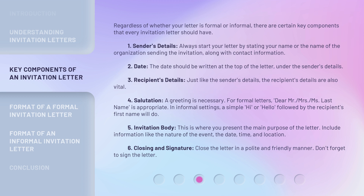In informal settings, a simple 'Hi' or 'Hello' followed by the recipient's first name will do. 5. Invitation Body: This is where you present the main purpose of the letter. Include information like the nature of the event, the date, time, and location. 6. Closing and Signature: Close the letter in a polite and friendly manner. Don't forget to sign the letter.